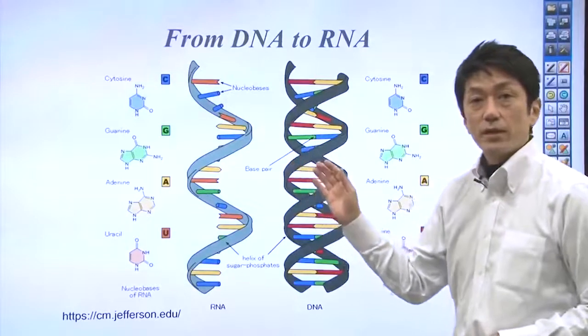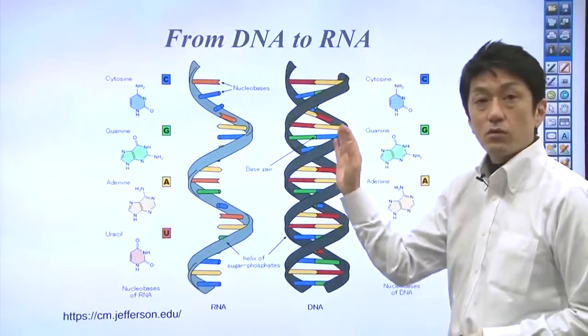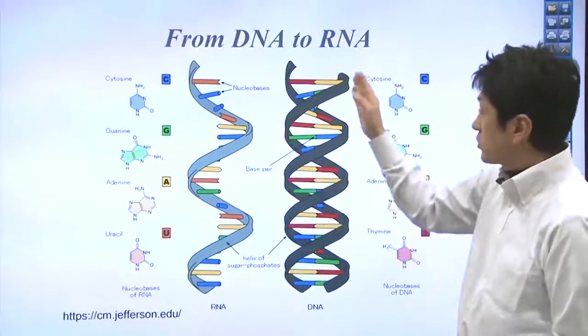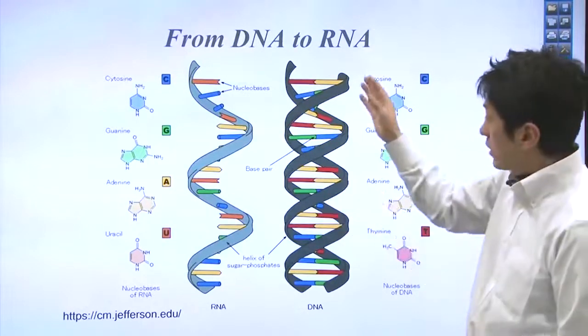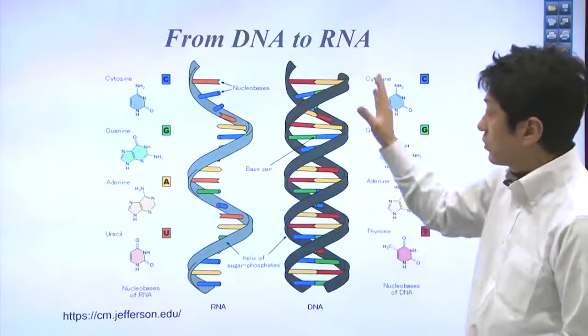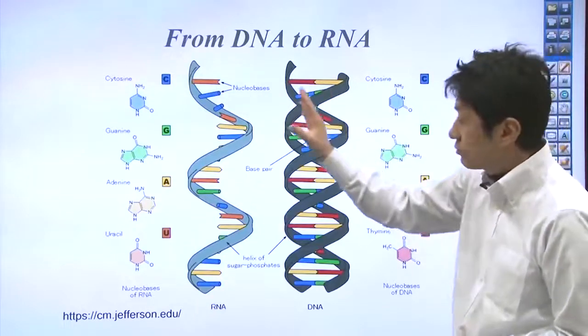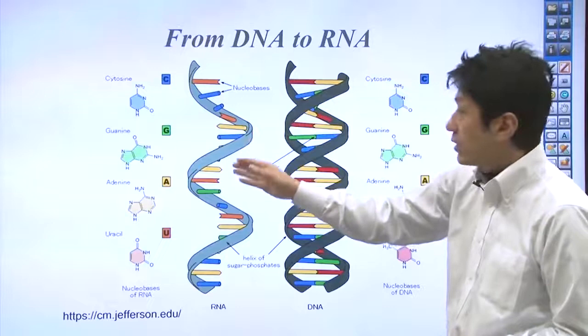Here's the structure of RNA. RNA is a copy of one strand of DNA. As I mentioned earlier, DNA has a double strand structure. One strand is copied to messenger RNA.